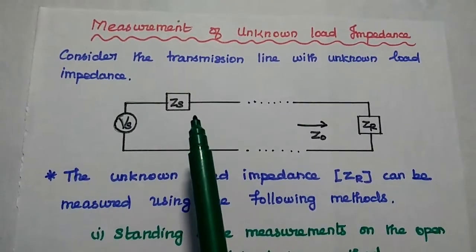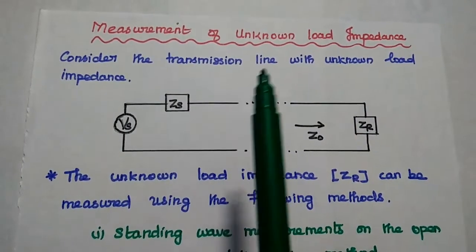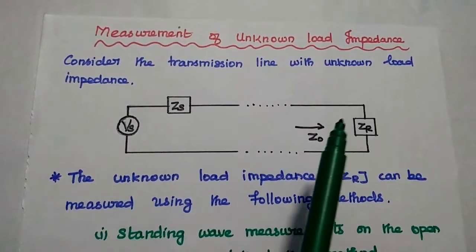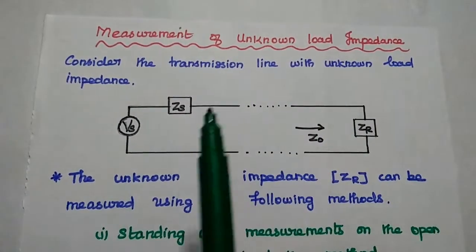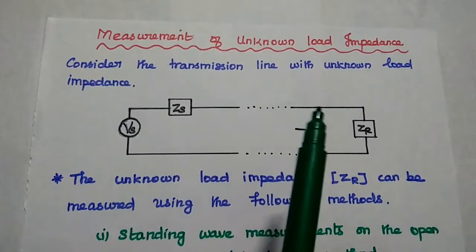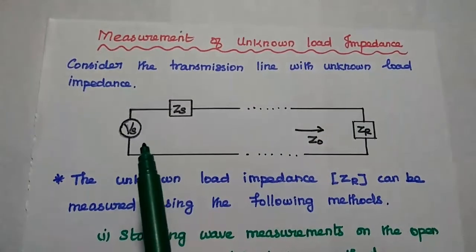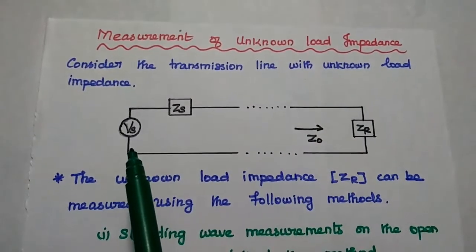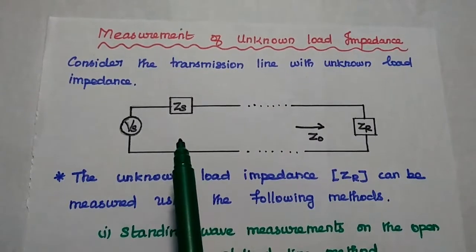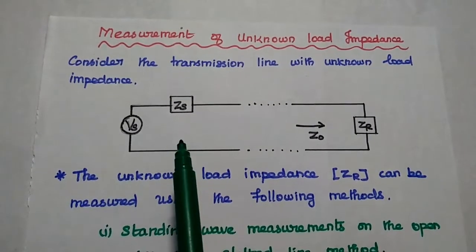Dear students, now we are going to discuss measurement of unknown load impedance of the transmission line. Let's consider the transmission line with unknown load impedance ZR. Vs is the sending end voltage, and Zs is the sending end impedance or input impedance.